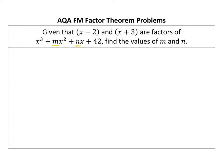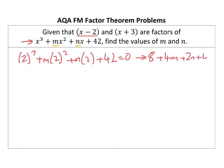So with the first one, I'm going to try and color code it. I need to put 2 into this, and I know it should equal 0 because they are factors. So we should have 2 cubed plus M times 2 squared plus N times 2 plus 42 equals 0, which is going to give me 8 plus 4M plus 2N plus 42 equals 0.